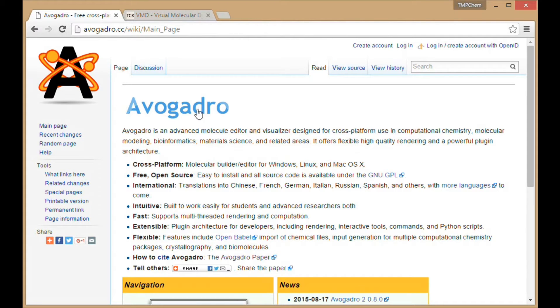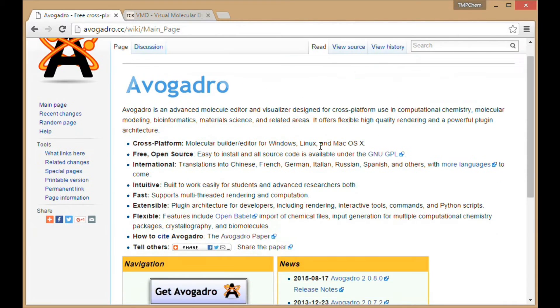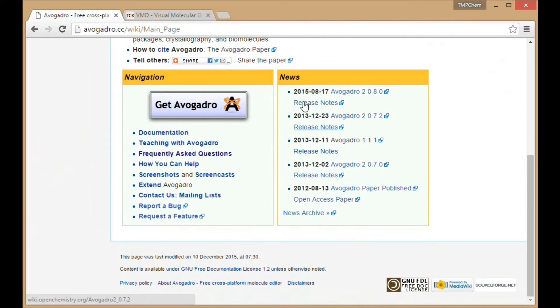So if I go to these websites, I have Avogadro here on the wiki for its creators, and I have various versions that we can download and install there. The version I have installed is 1.1.1.